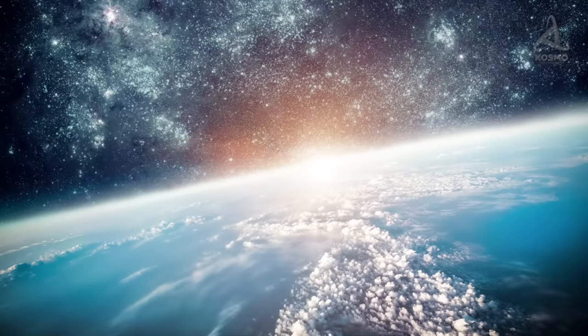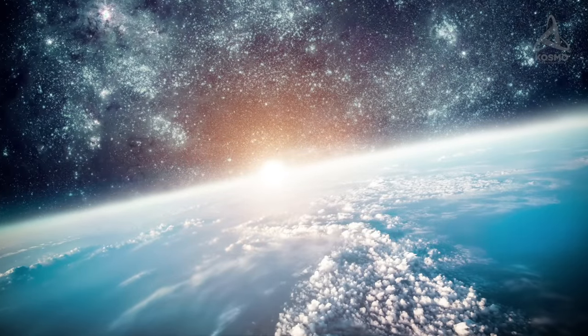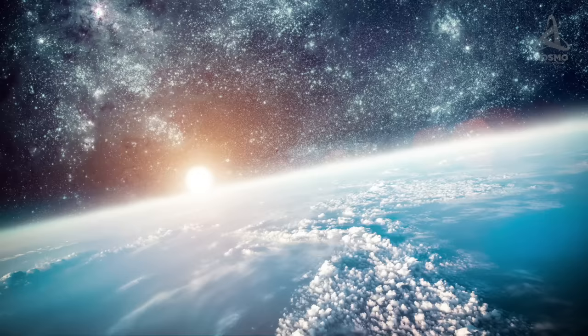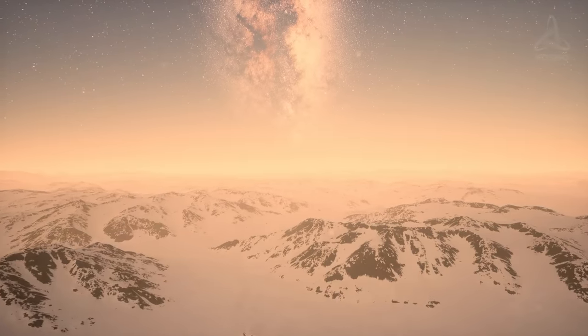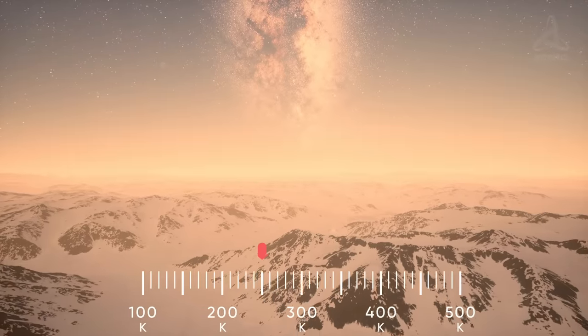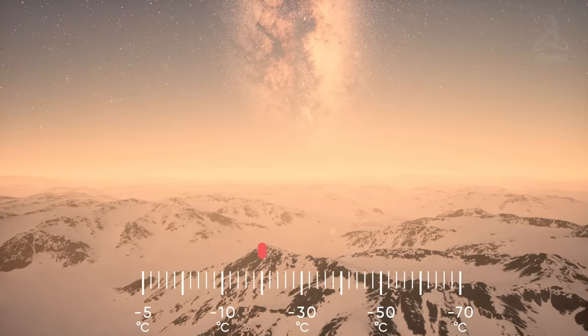Gliese 832 c is estimated to receive approximately as much energy flux from its parent star as does the Earth from the Sun. The average surface temperature on the planet is 253 degrees Kelvin or 20 degrees Celsius below zero.